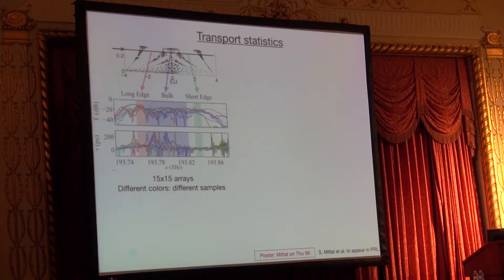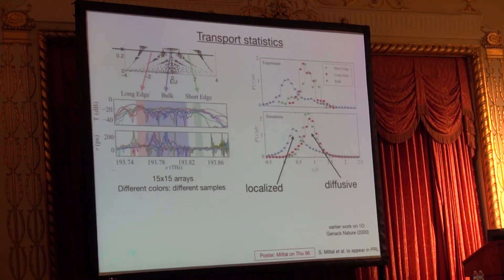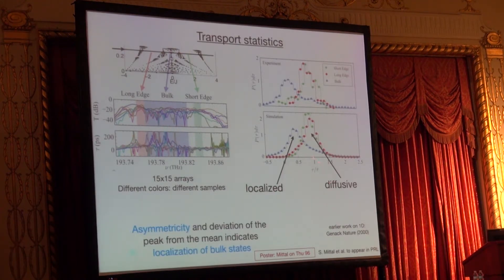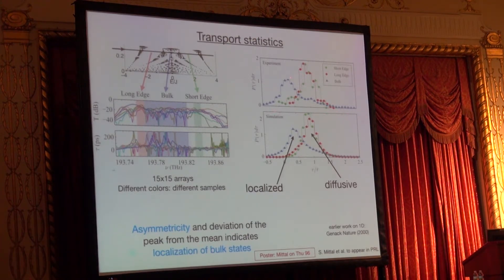We can also look at the distribution of the Wigner delay time. For the edge states, we see that they are Gaussian. But for the bulk states, we see that they are asymmetric and have an exponential tail.